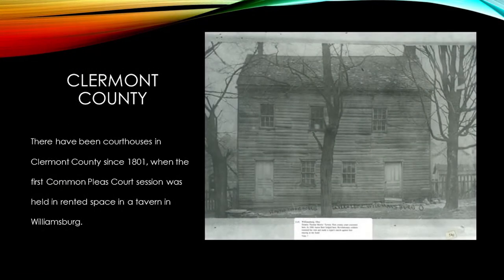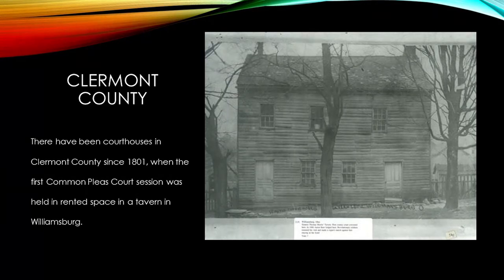Now that we know a little about the history, let's talk about the building history. This is a tavern, but more importantly, it was the first courthouse in Clermont County. They rented space in this tavern in Williamsburg, set up court there — a judge would sit, attorneys would make arguments. 'Admitted to the bar' means admitted to the court, not necessarily admitted to the tavern. Originally Clermont County included Brown County — it was much bigger. But that's the first courthouse. Justice was going on as an ongoing civic service before Ohio was even a state.